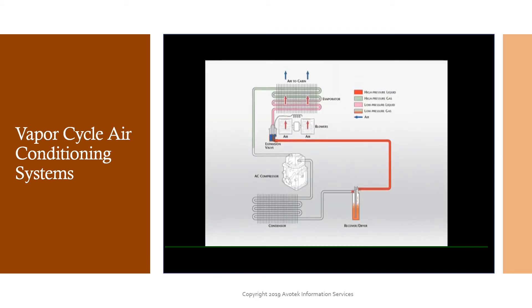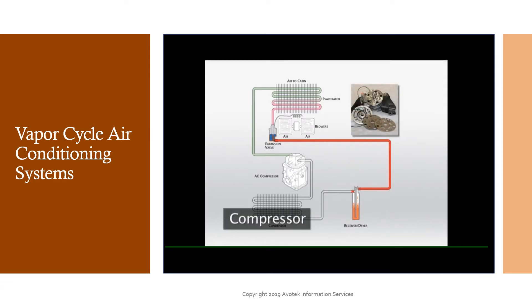The gaseous refrigerant exiting the evaporator is drawn into a compressor where its pressure and temperature are increased. This high-pressure, high-temperature, gaseous refrigerant flows through tubing to a condenser.